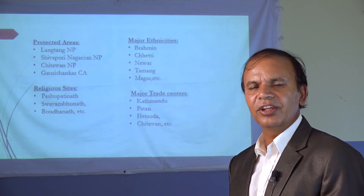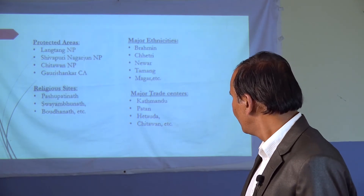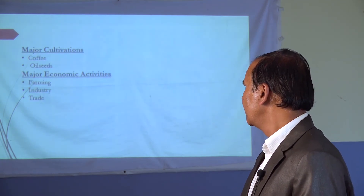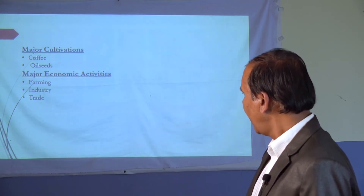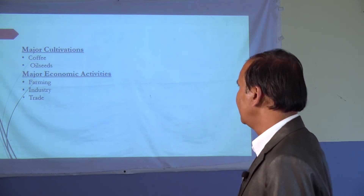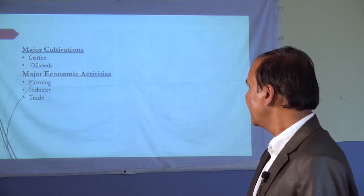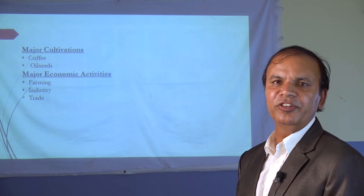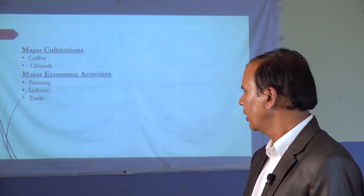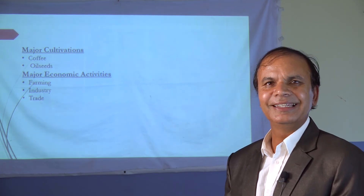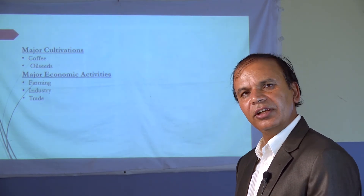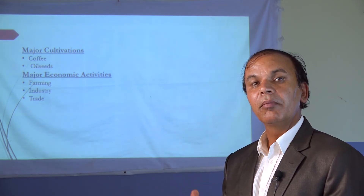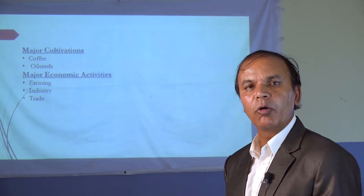The major ethnicities or races of Bagmati Province are Brahmin, Chhetri, Newar, and Magar. These groups live and are settled throughout Bagmati Province. Major religious sites are places where people go to worship, follow religious practices, or celebrate religious festivals — these are significant religious sites of Bagmati Province.